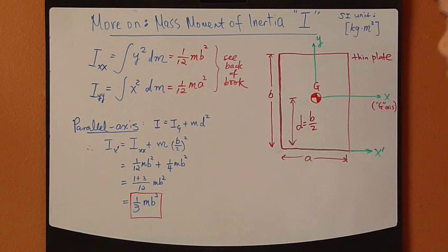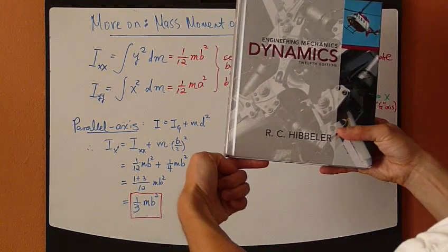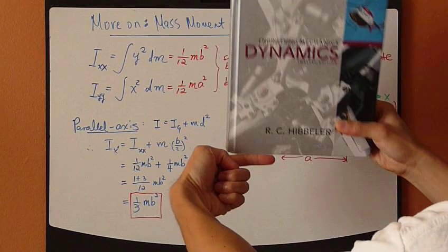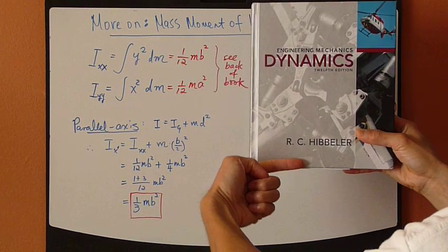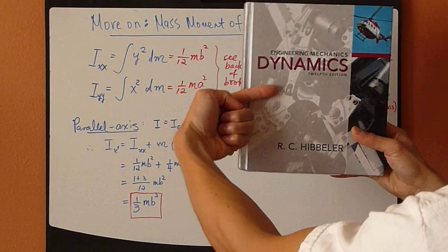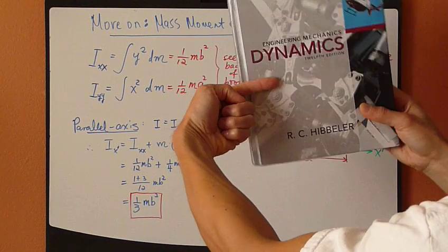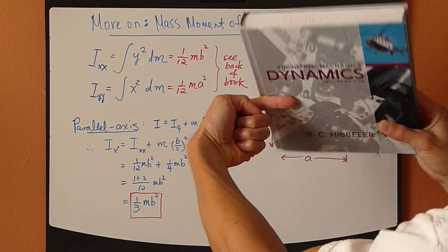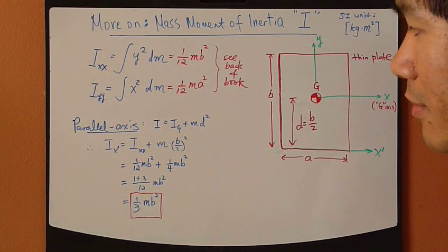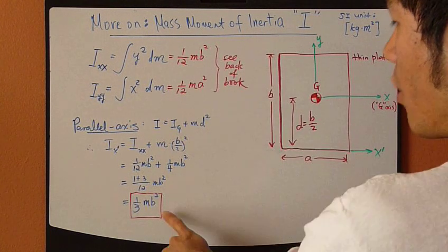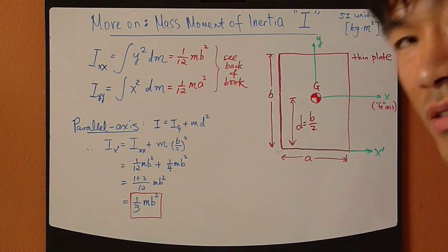So the rotational resistance about this bottom axis is 1/3 mb², versus if this book was to rotate about the centroidal axis, the resistance is only 1/12 mb², which is smaller than 1/3 mb², which makes sense.